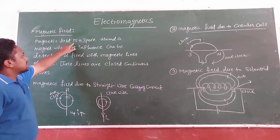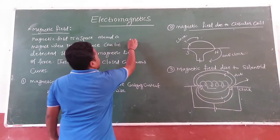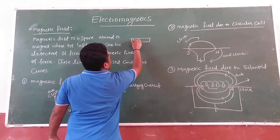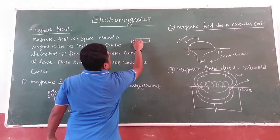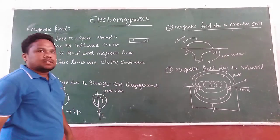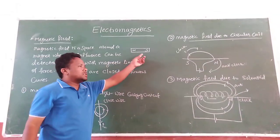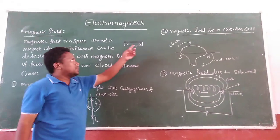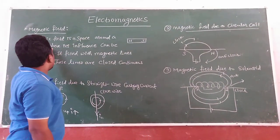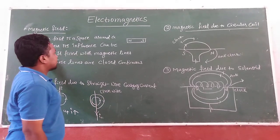Magnetic field is a space around a magnet. You need to take one bar magnet like this. Every bar magnet consists of a North pole and a South pole. What is the magnetic field? It is a space around the magnet where its influence can be detected.